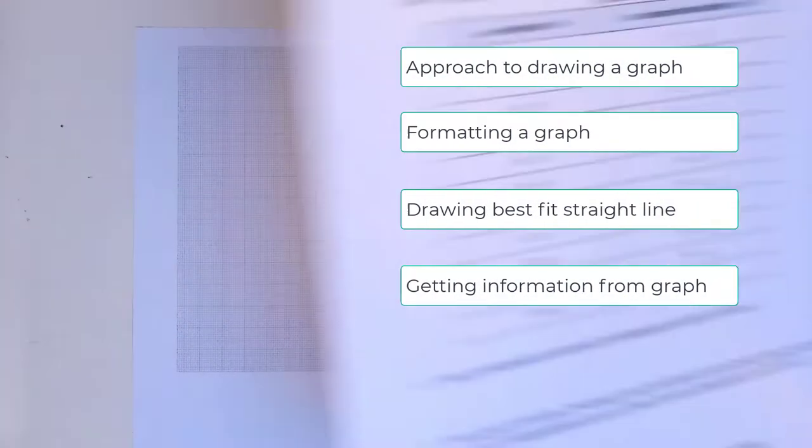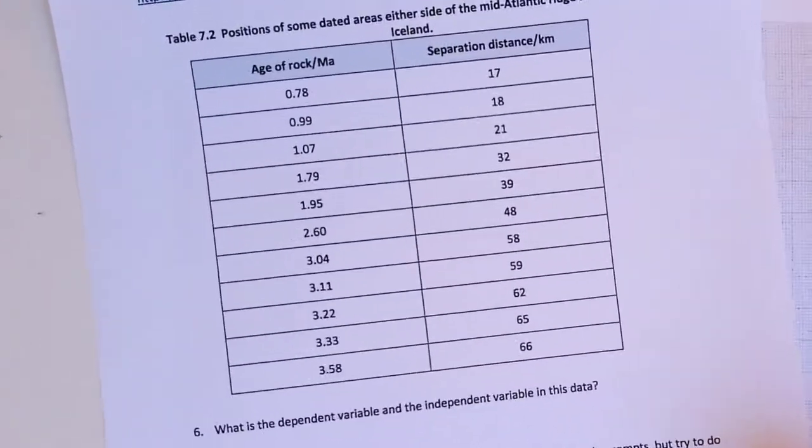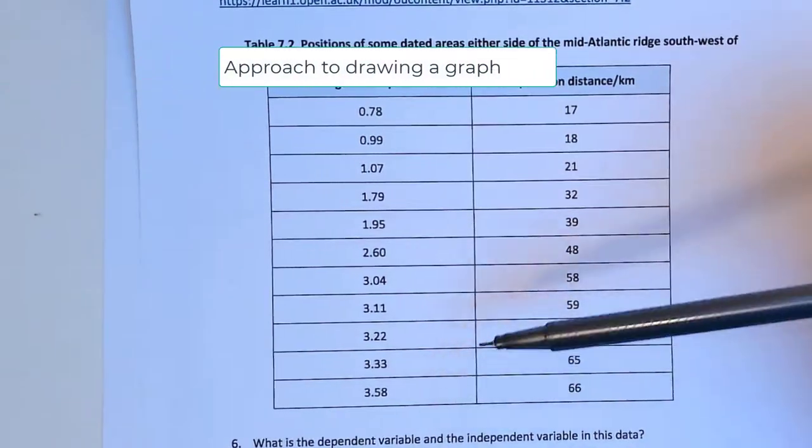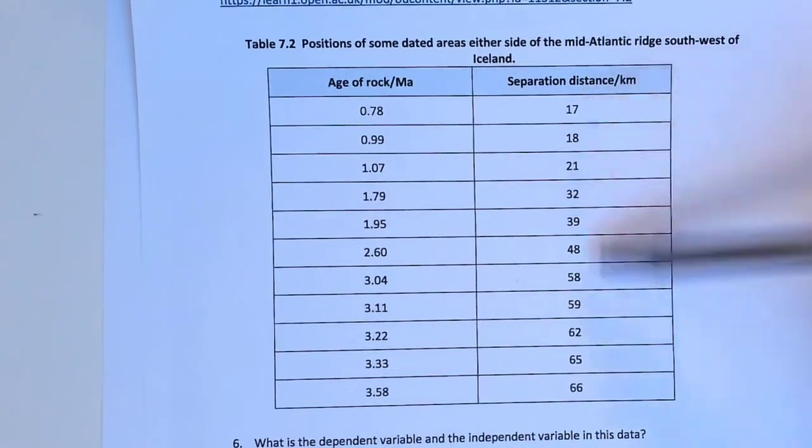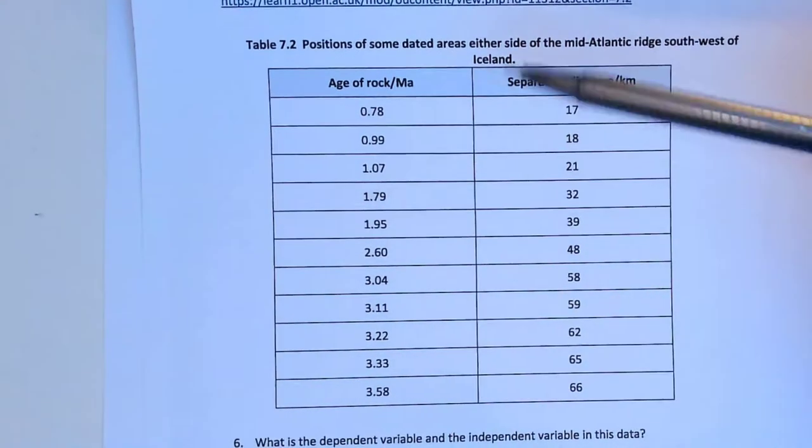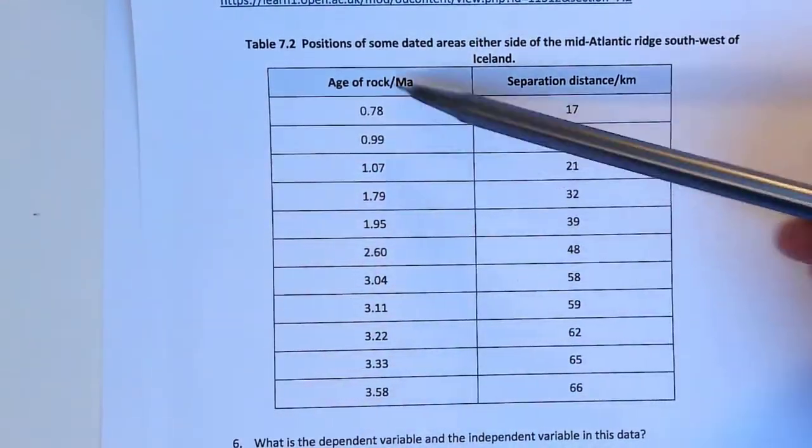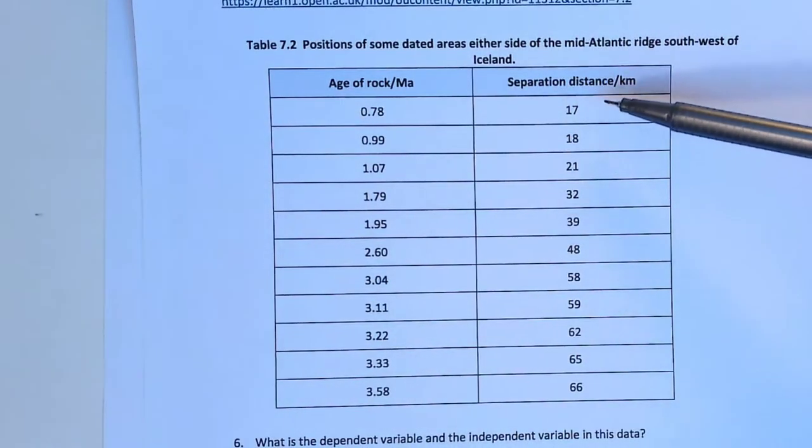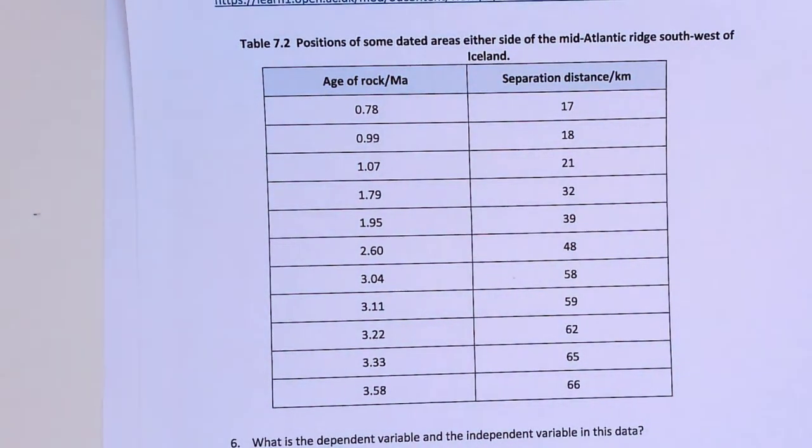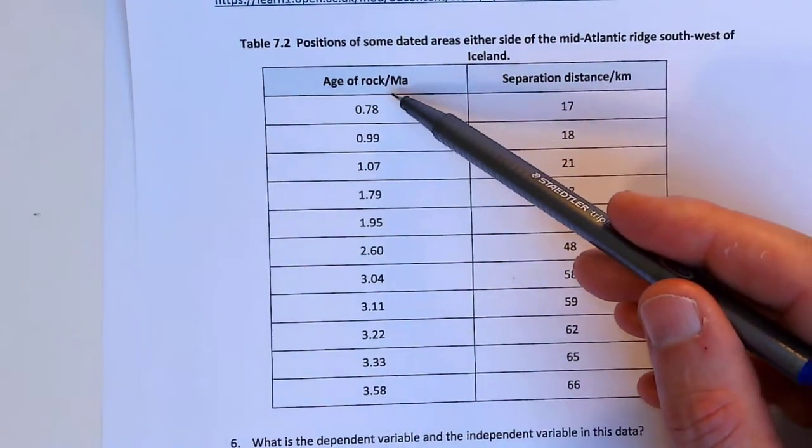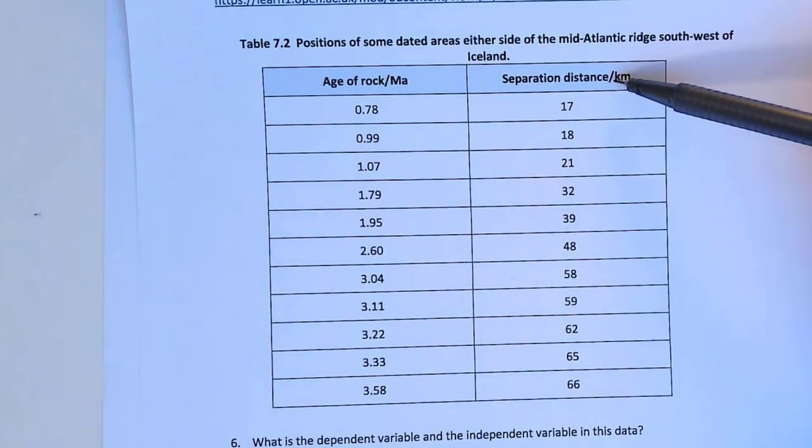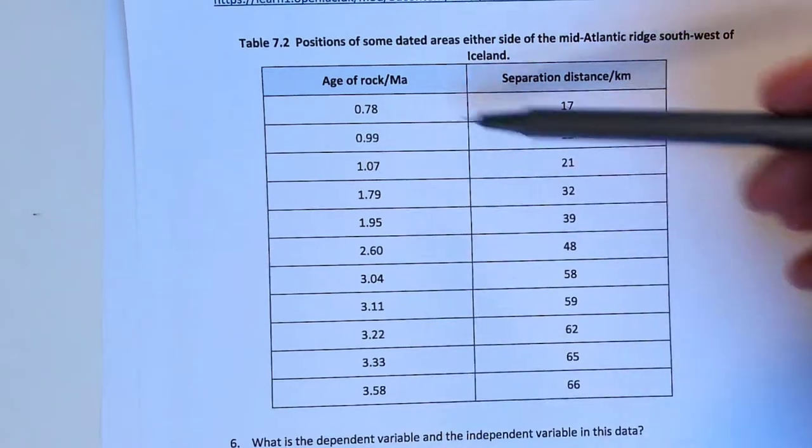So I have some data here, and in this data we can see that we've got age of a rock based on separation of two plates, and the separation distance and how that depends on the age. Here the independent variable is the age of the rock, that's my x-axis, and the dependent variable is the separation distance. So I want to plot this information. We can see that the age of the rock goes from 0 up to 3.58 and the separation distance goes up to 66.